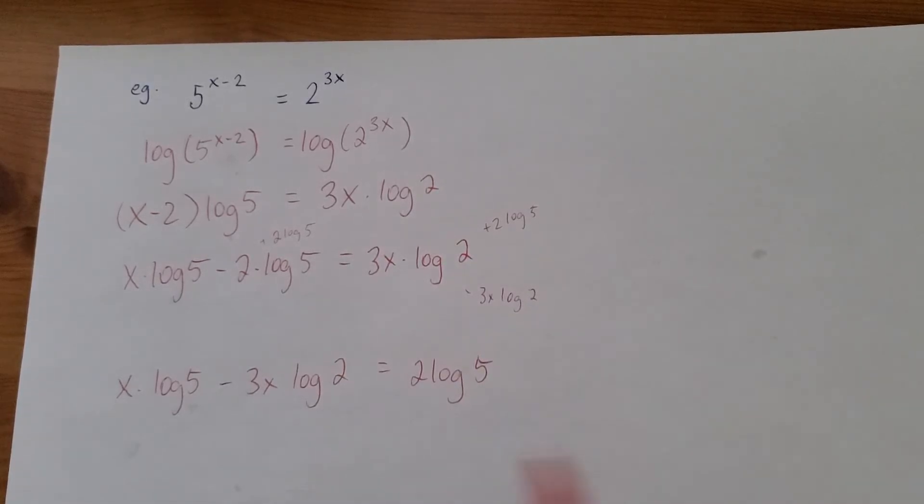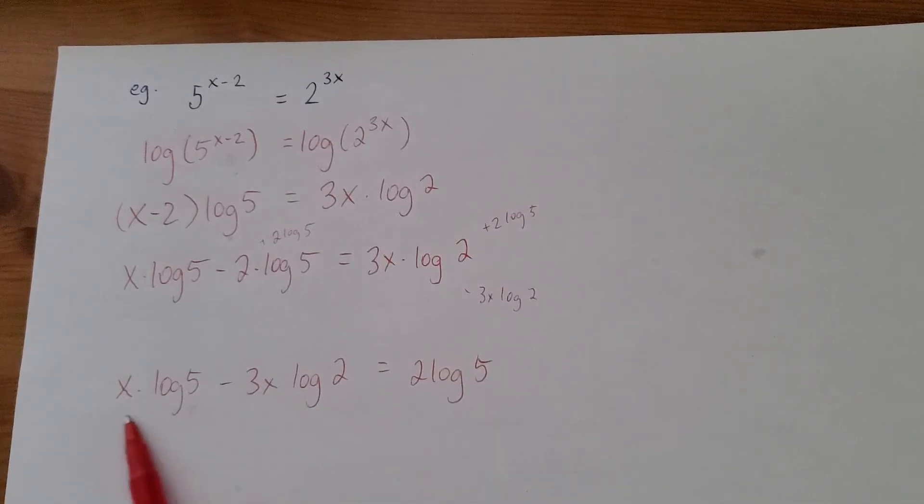Now, here's the trickiest step. I got an x in both terms. Now, I know these terms look really complicated. Logs aren't nice. Nobody likes them. But they are just terms. So it's x times log 5 minus 3x times log 2. If you want to isolate x, what you're going to have to do is factor.